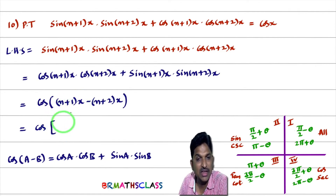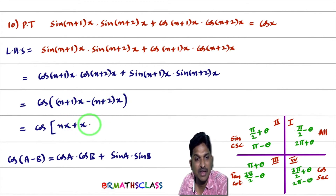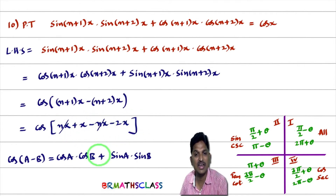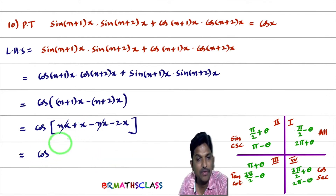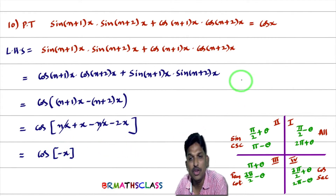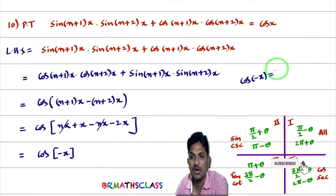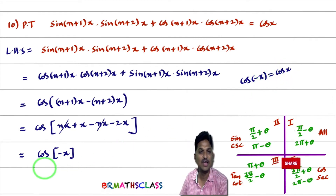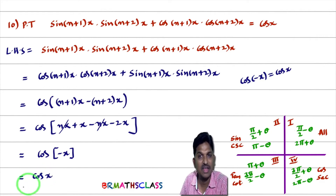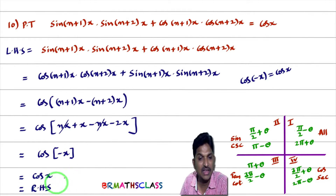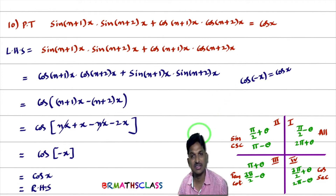Applying the formula: cos(a − b) = cos((n+1)x − (n+2)x) = cos(nx + x − nx − 2x) = cos(x − 2x) = cos(−x). Since cos(−x) = cos x, and the RHS is cos x, we have LHS = RHS. In this class we proved 3 problems.